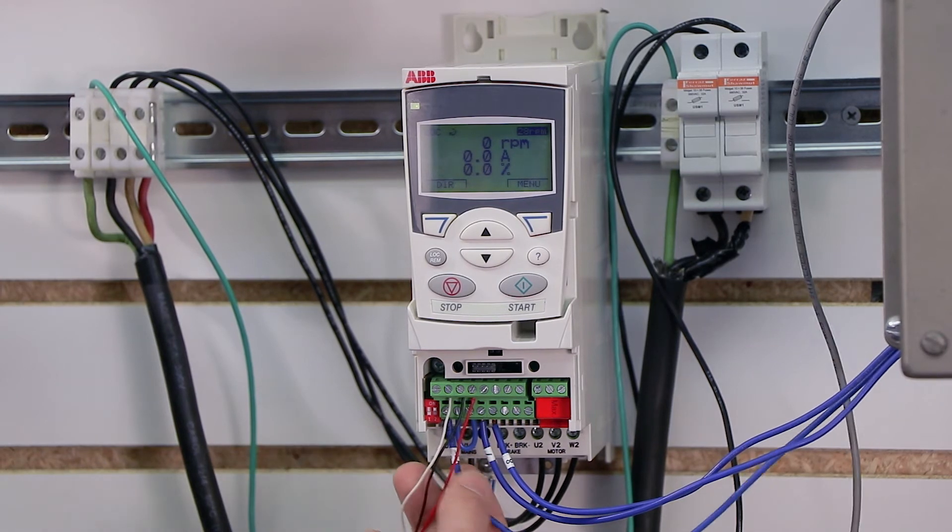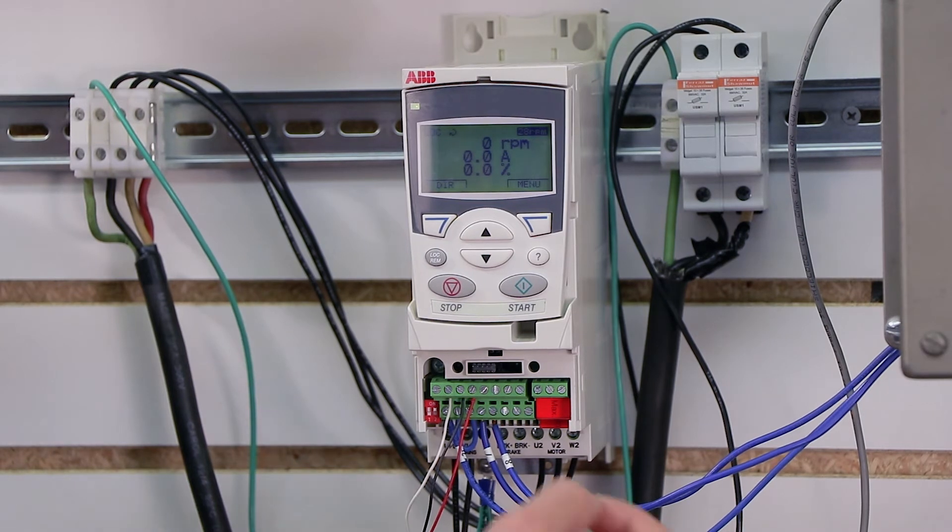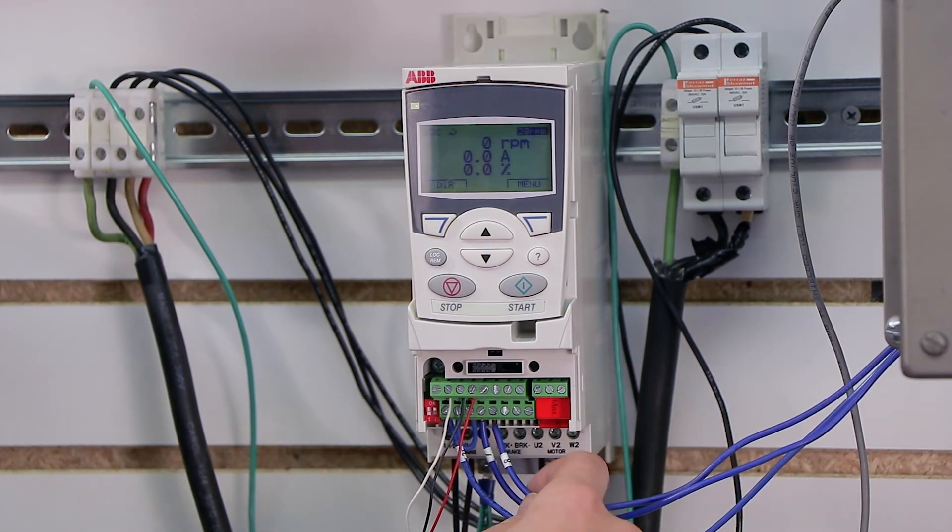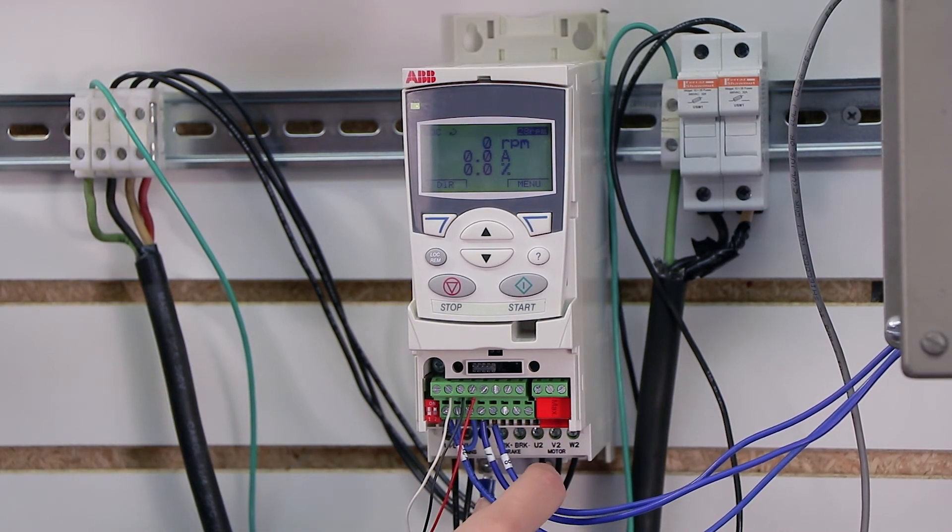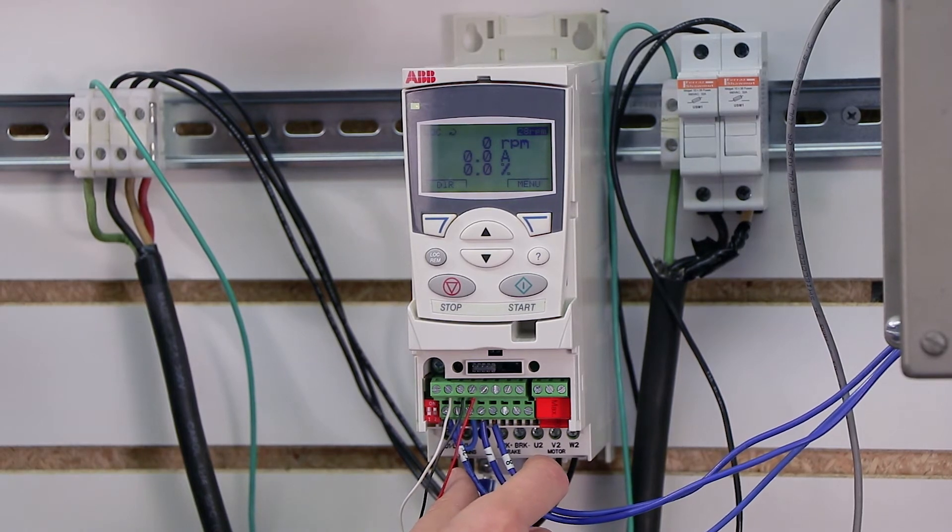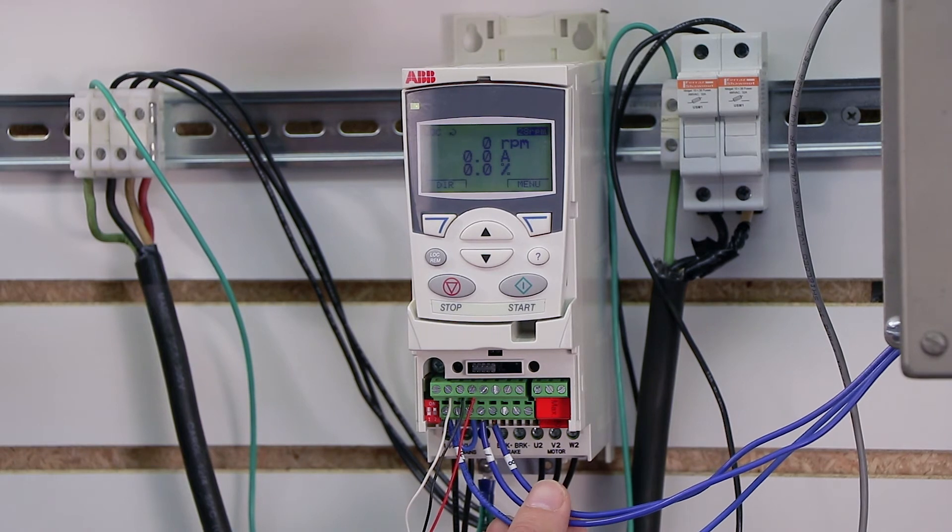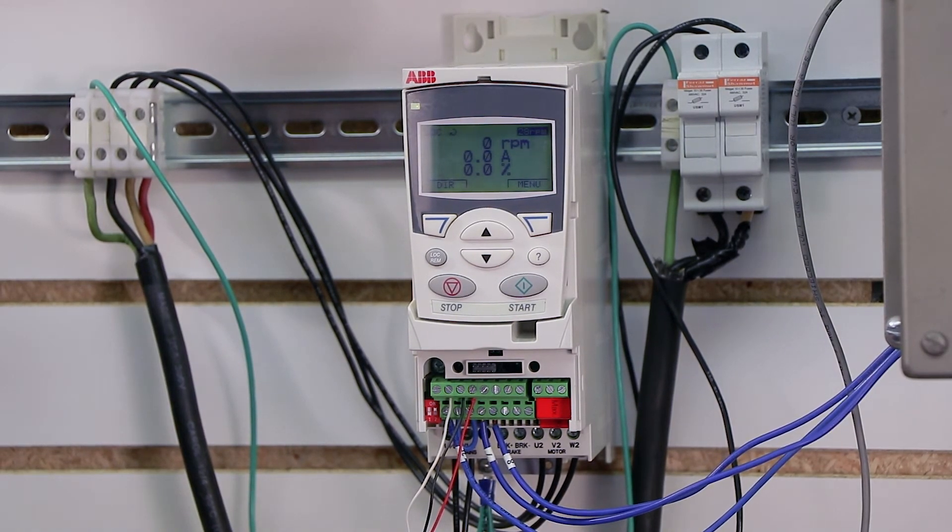So we're going to have our terminal 9 electricity flow into one side of our normally closed stop button, and on the other side of our normally closed stop button, we're coming back into terminal 13. Electricity will always be flowing between those two unless I press the stop button, and then the drive knows a stop command has been issued. And that is all there is to wiring and programming it, so let's go ahead and run it.